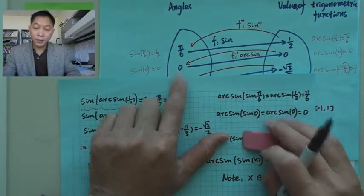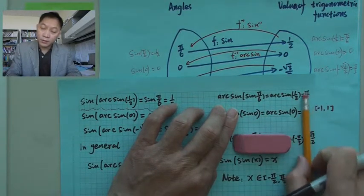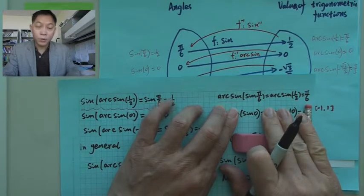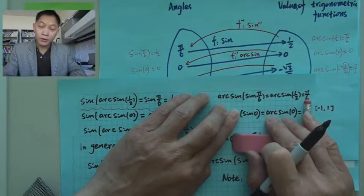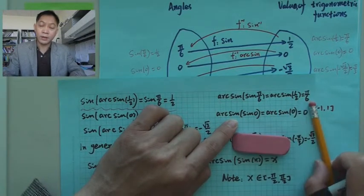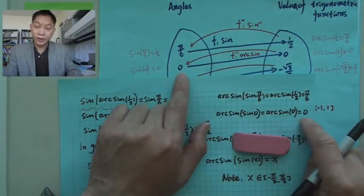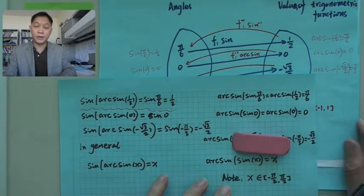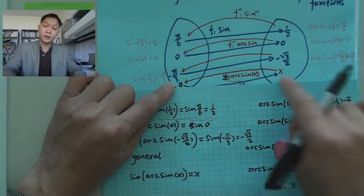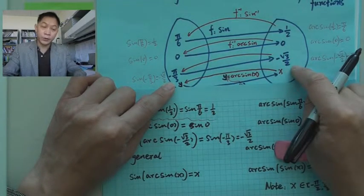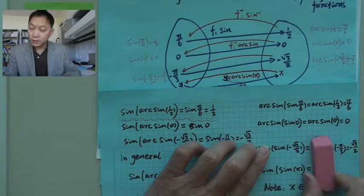You can also look at zero: starting from zero, using sine gives sine(0) = 0. Then from that zero, applying arc sine takes you back to zero. So arc sine(sine(0)) = 0. Similarly, for -π/3: -π/3 goes to -√3/2 using sine.